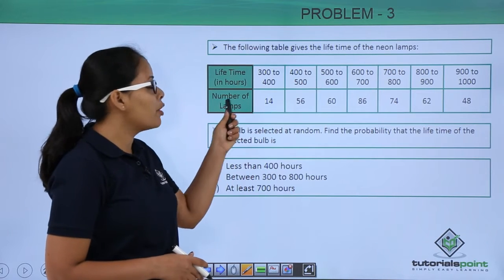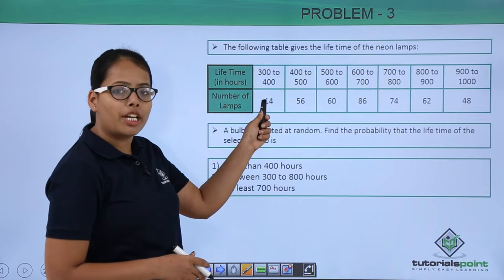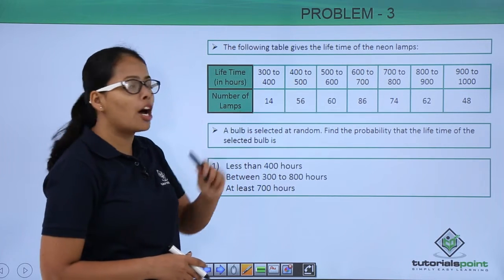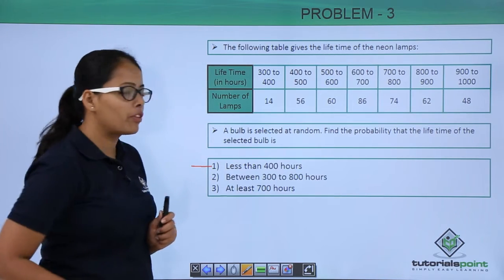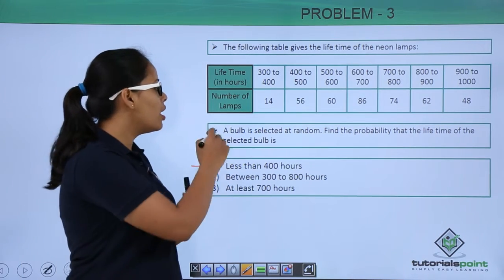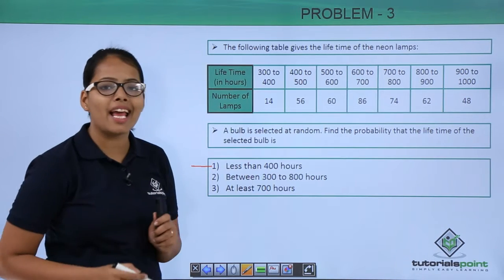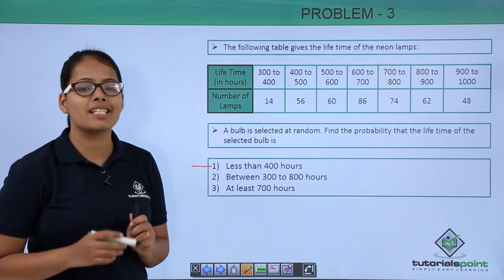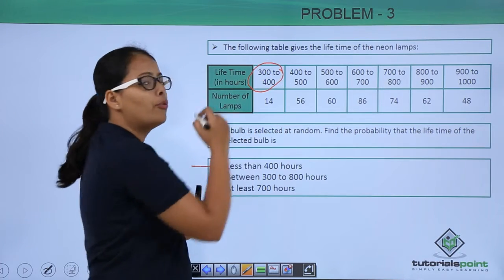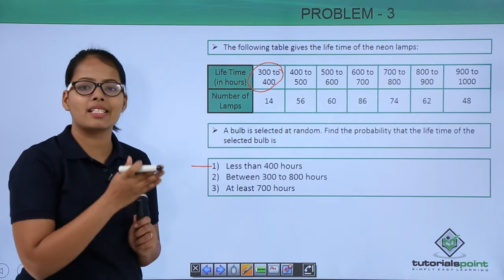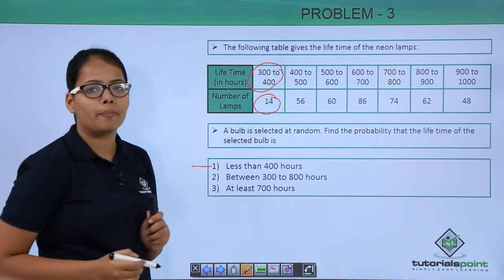You can see here the number of lamps — there are 14 lamps in the interval of 300 to 400 hours. So for the very first problem, when they ask for a bulb selected with a lifetime less than 400 hours, this will be the interval 300 to 400, because this represents less than 400 hours. There are 14 bulbs in this range.